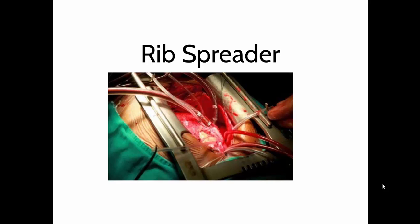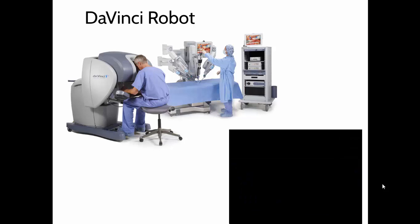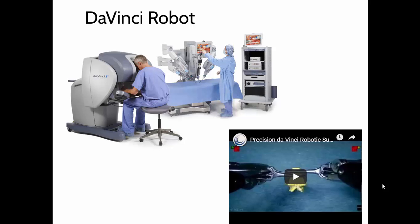These are the edges of the rib spreader that are in the chest — they've cranked it open. Some of the tubes connect the blood supply to the heart and lung machine, and some are for suction. The doctor can then access the heart to do the surgery. Today there are more modern, less invasive ways of doing this surgery. This is called robotic-assisted surgery.